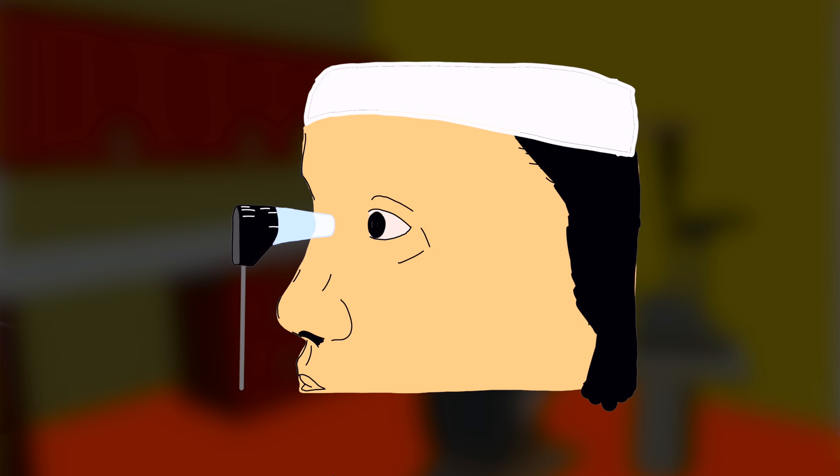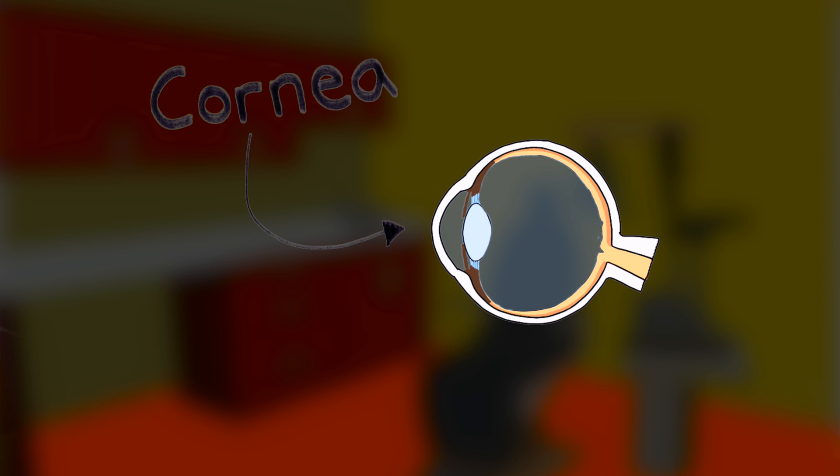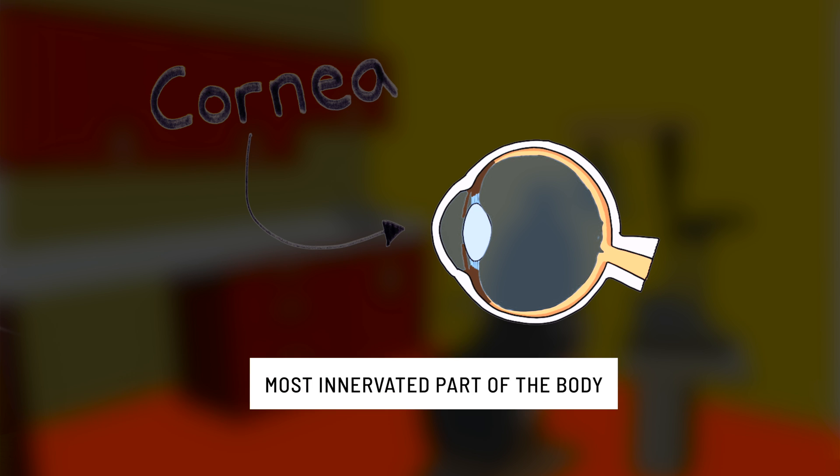Let's take a moment to think about how this can be done. Other methods of flattening the cornea involve physically touching the ocular surface, and it just so happens that the cornea is the most highly innervated part of the body, meaning it is sensitive to the tiniest bit of sensation.